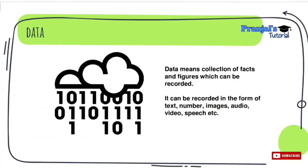The first term is data. What is data? Data means a collection of facts and figures which can be recorded. Data can be recorded in different formats: text format, number format, images, audio format, video format, and even in speech format.